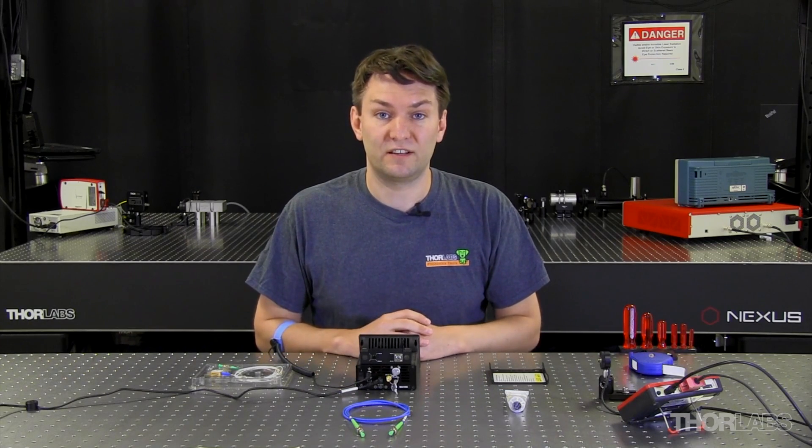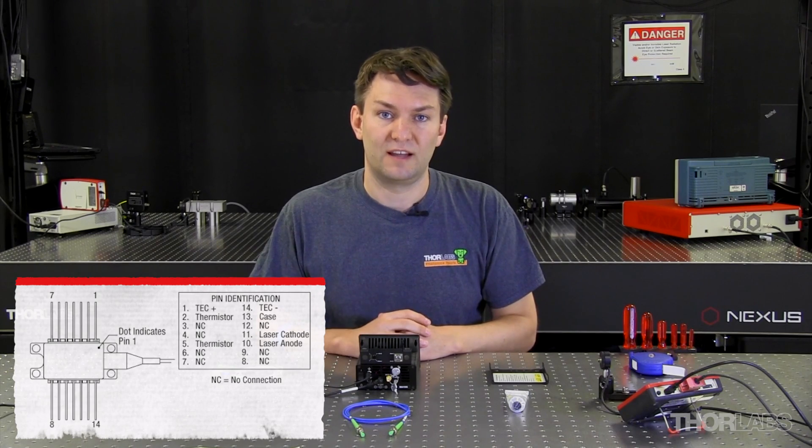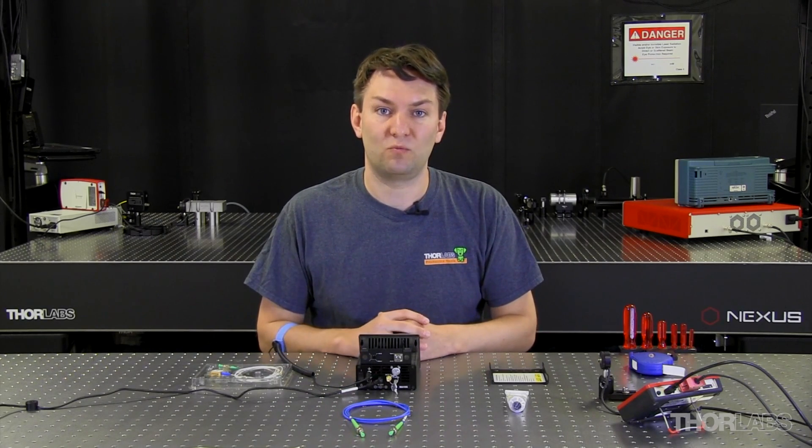The second thing to consider with your butterfly package is which connections are made with the internal components. To determine this, you can look at your spec sheet, and that'll tell you which pin connects to which component. Now luckily, butterfly packages usually come in two types that are conveniently named type 1 and type 2. And if you happen to have a mount that is configured for a known type, and it matches the type of laser that you want to use, then you just have to look for where the pin 1 location is.